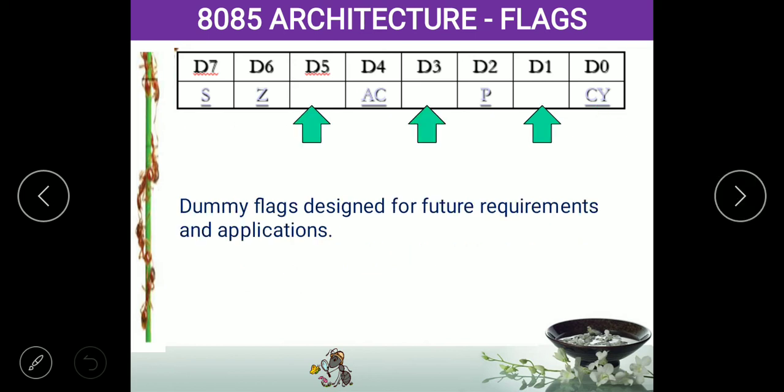The remaining three pins — D5, D3, and D1 — are called dummy flags. Nothing happens on these pins. Whether they are 0 or 1, nobody needs to bother about them. The processor will not read these pins, and the user will not read these pins. They are called dummy pins because the minimum memory capacity is an 8-bit element, so for manufacturing reasons we must fabricate an 8-bit memory, and since all the status flags are covered, these remaining pins are kept as dummy.